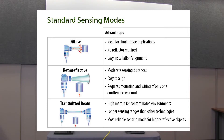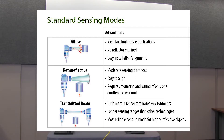The one you pick will be dependent on target, environment, cost, and performance. Transmitted beam sensors are capable of the longest sensing range. Retro-reflective sensors are capable of a long sensing range as well. Diffuse sensors are generally for close-in sensing because the sensing distance is determined a lot by the color and the shape of the object.